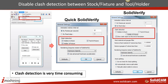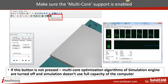The last important setting is to switch on multi-core support. Most of the time multi-core support is turned on automatically if your hardware is multi-core enabled. But just in case it has been switched off, you can enable it again. This will allow the simulation to use the full capacity of all available CPU cores and significantly speed up simulation of your part.